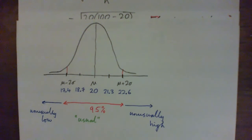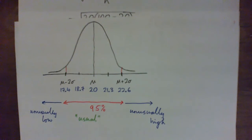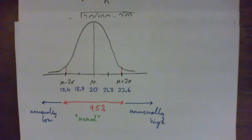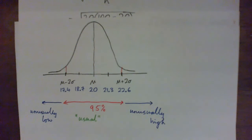So now, what's usual and what's unusual? Anything between 17.4% and 22.6% is usual. Anything above 22.6% is unusually high. Anything below 17.4% is unusually low.